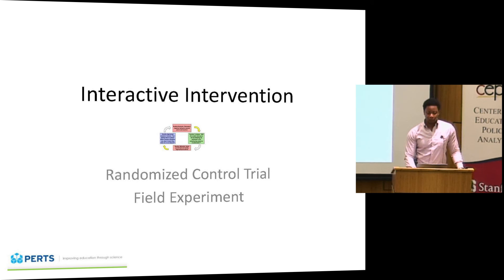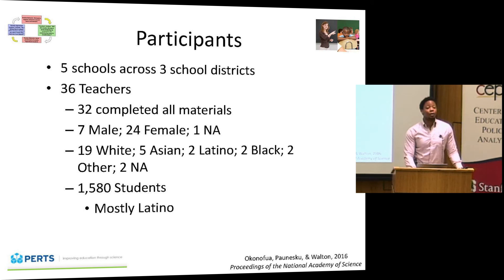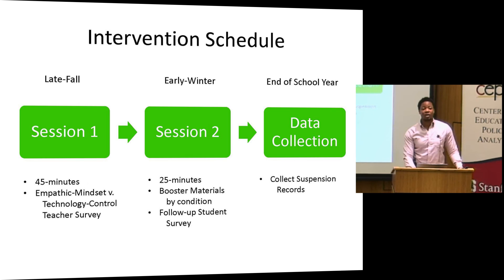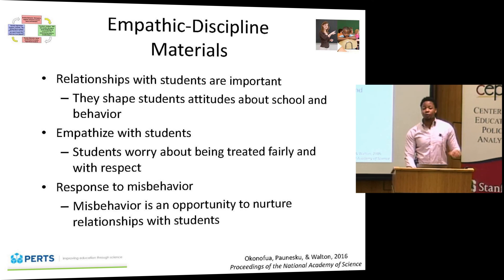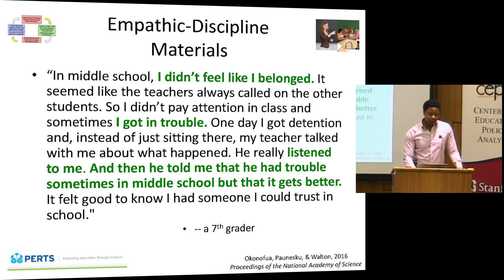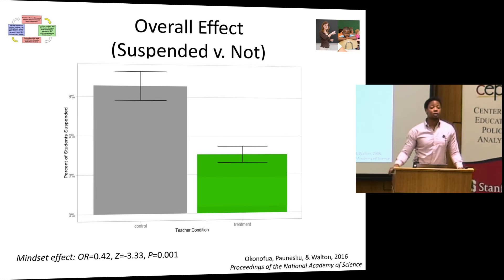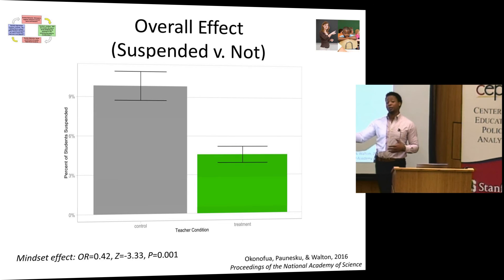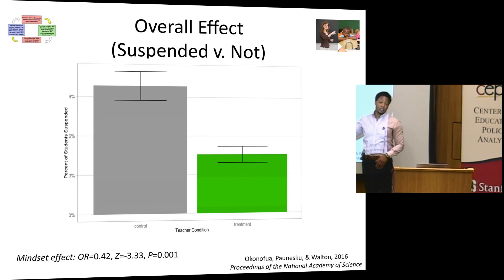We ran an intervention with every middle school in three school districts — a brief, scalable intervention that was 45 minutes in the fall and 25 minutes in the winter, then we collected discipline records at the end of the year. The intervention communicated in various ways that students are learning and growing, and that misbehavior is not an indictment but an opportunity to improve. Randomly, the other half of teachers read about how technology is important for engaging students — something teachers already knew, unrelated to empathy — so we could look at the difference.